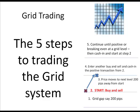Once it has reached the next level, you enter a buy and a sell at that level again. You then cash in your positive transaction — the buy from your initial transactions will be positive — and leave the negative transaction open. You continue until all the transactions you have entered are positive or breaking even at a grid level. Once that happens, you cash it all in and start all over again.